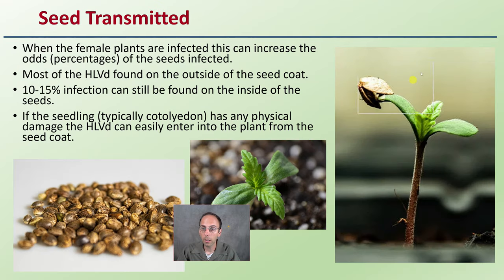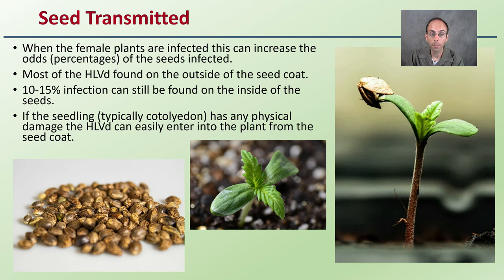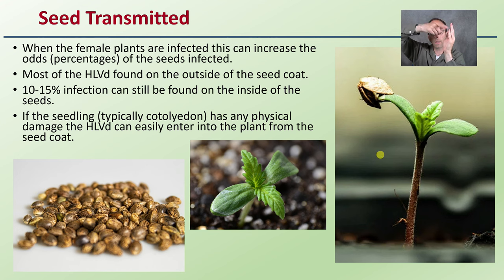Seed transmission is a bit more complex. When female plants are infected, this increases the percentage of seeds that are infected. Most of the hop latent viroid found is on the outside of the seed coat, but 10 to 15 percent infection can still be found on the inside of the seeds. If the seedling — typically at the cotyledon stage — has any physical damage, the hop latent viroid can easily enter the plant from the seed coat. As the seedling unfurls and the seed coat may still be attached, any physical contact can introduce the viroid into the very young plant.